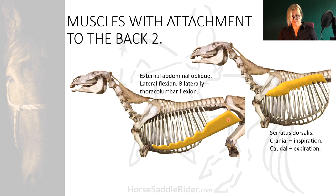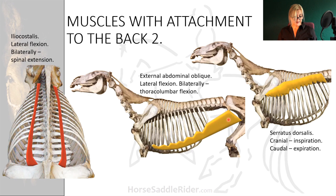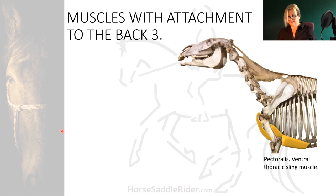Iliocostalis is another spinal lateral flexor which will extend the spine when recruited bilaterally. The pectoralis muscle group forms the ventral thoracic sling together with serratus cervicis and thoracis — those two pairs of muscles suspending the rib cage and base of the neck from the underside of the scapulae.